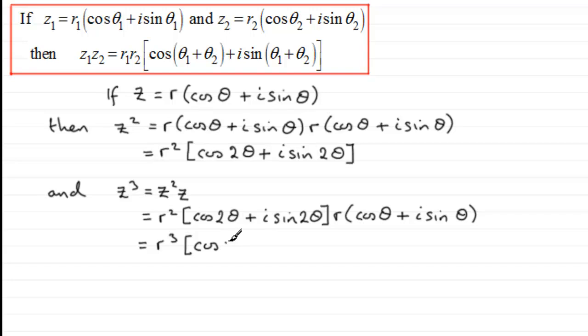So we get the cosine of 2θ plus θ, in other words 3θ. And the same with the sine. We've got i sine of 2θ plus θ, which is 3θ.